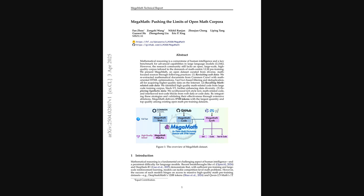That huge scale really highlights the effort involved — over 370 billion tokens. The key takeaways are not just the massive size of MegaMath, but also how they carefully combined filtered web data, code, and validated synthetic math problems. This kind of resource is super important for training AI models that can actually get better at complex mathematical reasoning. Well, that's all we have for today. Thanks for tuning in to the AI Research Roundup. I'm your host, Alex.